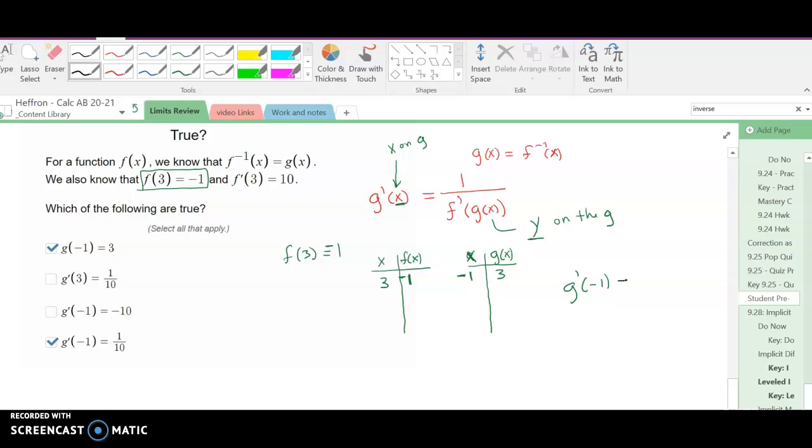Well, g prime of negative one will be one over the derivative of the f function, but not at negative one. Instead, we're going to look for g of negative one.